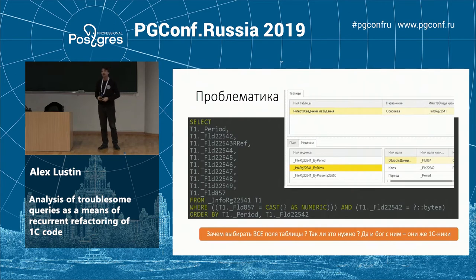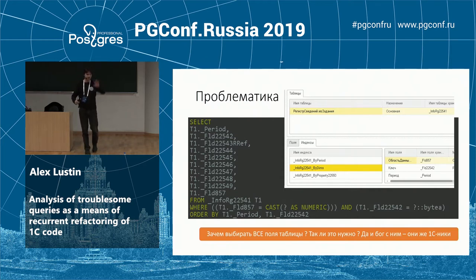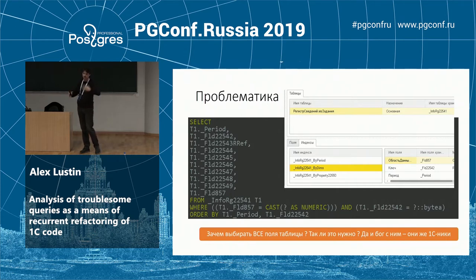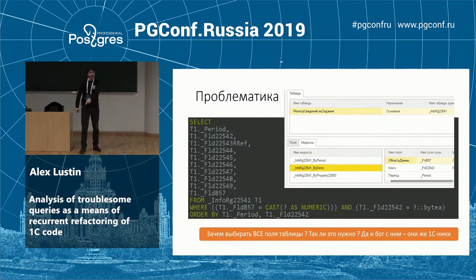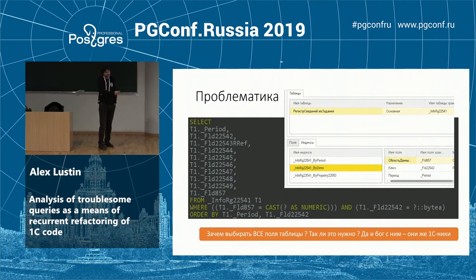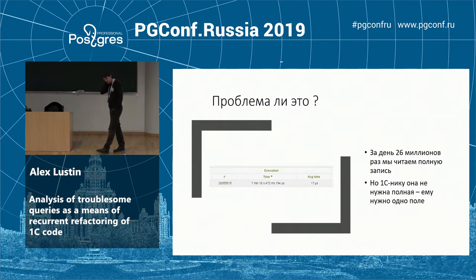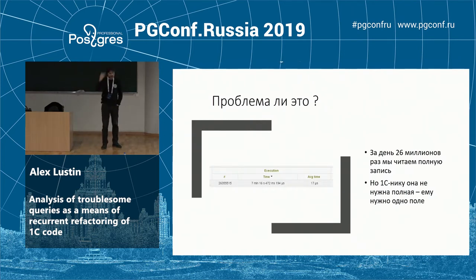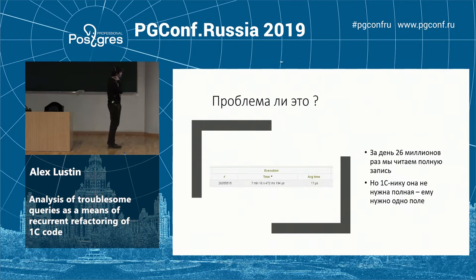InfoRG_2250C is the register of data — the register of rules. In the theory of DBMS, this is a table where several fields are a condition: you select this condition and receive a key. The specialists read this data register record and write something in the code. If it happens once, that's okay. But we found out that over one day this operation is conducted 26 million times. We get into the index — every record lasts about 7 nanoseconds — but I lose 7 minutes per day totally.